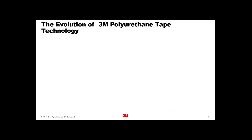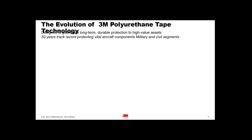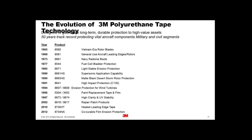Just to give you an evolution of where we've been — 3M has been making polyurethane tapes for about 50 years. Back in the Vietnam War, the rotor blades — I guess they must have been the Hueys — were actually protected with a very first generation of polyurethane tape to protect them from rain erosion operating in the jungle. Since then we've moved the technology forward. We started off with fairly crude polyurethane with rubber-based adhesives.